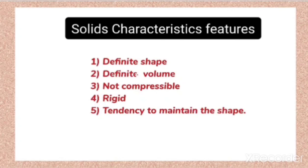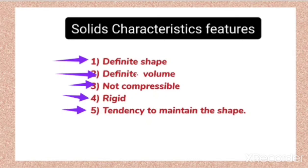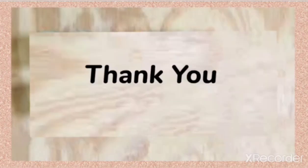Now we can list all the characteristic features of solids concluded from Activity 1.9: solids have definite shape, they have definite volume, solids are not compressible, solids are rigid and have a tendency to maintain their shape. These are the important characteristic features we have concluded by doing this activity. Further details will be discussed in the next video. This is all about this video. Have a nice day.